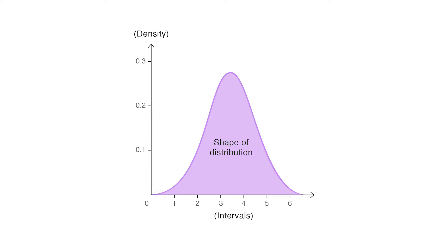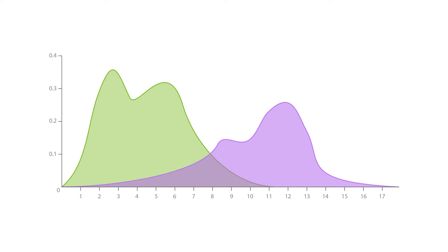This chart is a variation of a histogram that uses kernel smoothing to plot values, allowing for smoother distributions by smoothing out the noise. The peaks of a density plot help display where values are concentrated over the interval.